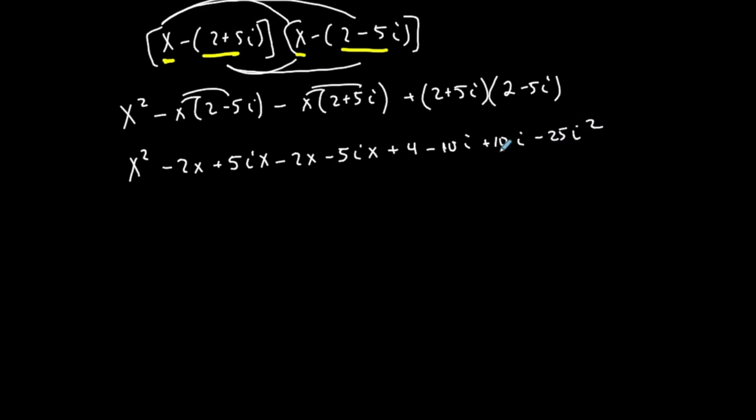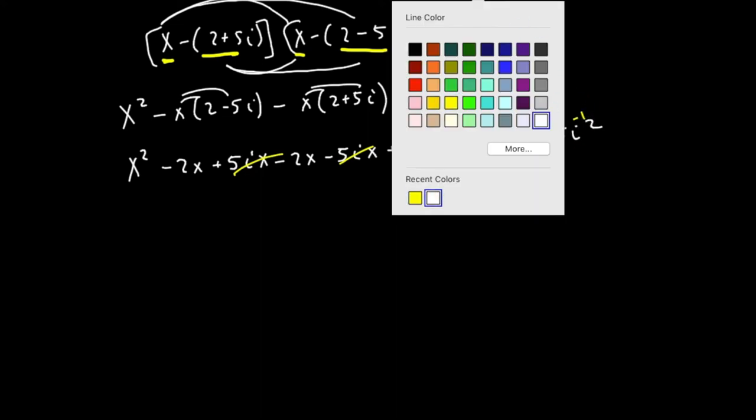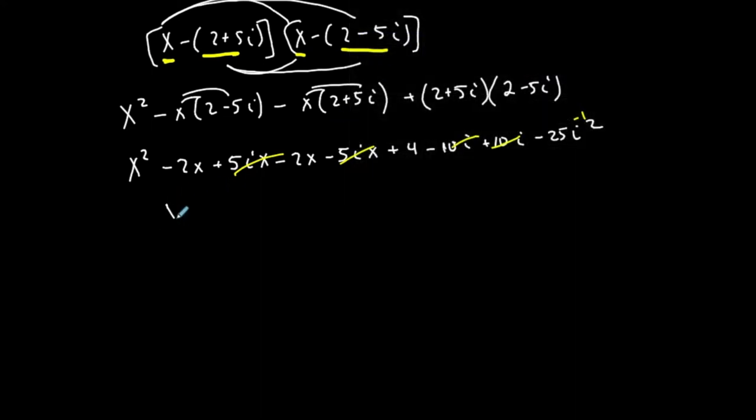So it looks way worse than it is, you'll see all the i terms go, and you know that i squared is negative one. So this all simplifies just into x squared minus 2x minus 2x minus 4x. Then I'm going to show this plus 4, and then this becomes a plus 25 because the i squared is negative one.